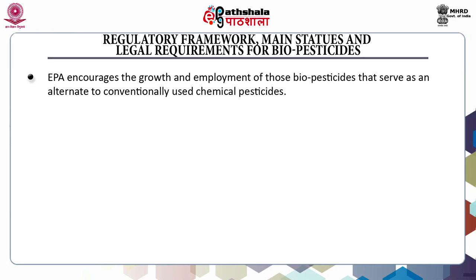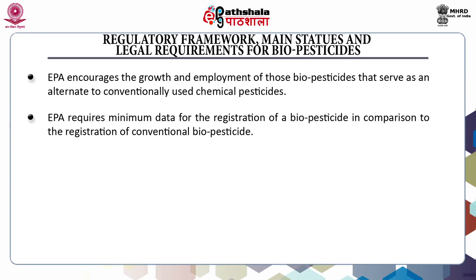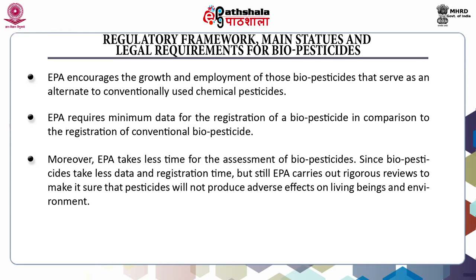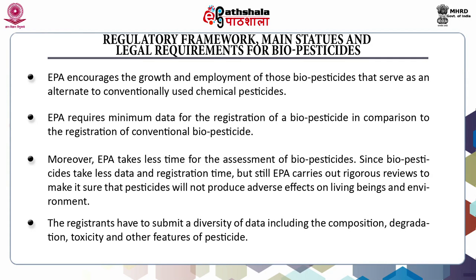EPA encourages the growth and employment of biopesticides that serve as an alternative to conventionally used chemical pesticides. EPA requires minimum data for the registration of a biopesticide in comparison to conventional pesticides. Moreover, EPA takes less time for the assessment of biopesticides, but still carries out rigorous reviews to ensure that pesticides will not produce any adverse effect on living beings and the environment. The registrants have to submit a diversity of data including their composition, degradation time, toxicity and other features of the pesticides.